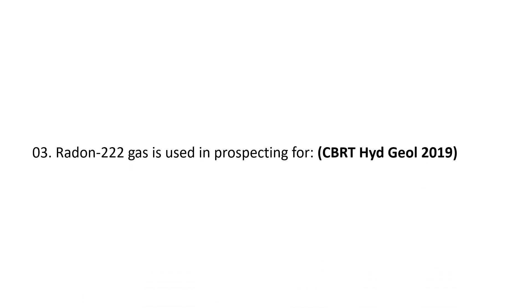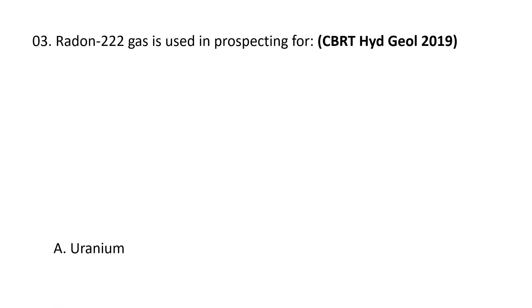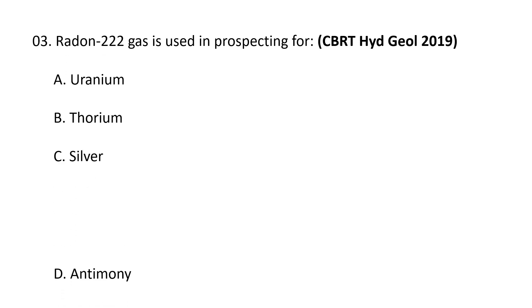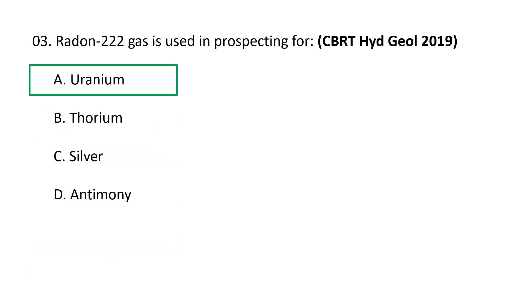Next question. Radon gas is used in prospecting for: A. Uranium, B. Thorium, C. Silver, D. Antimony. The correct answer is A — Uranium.